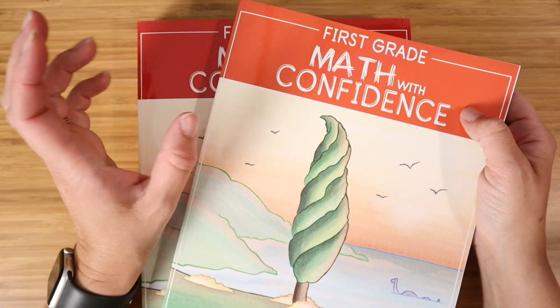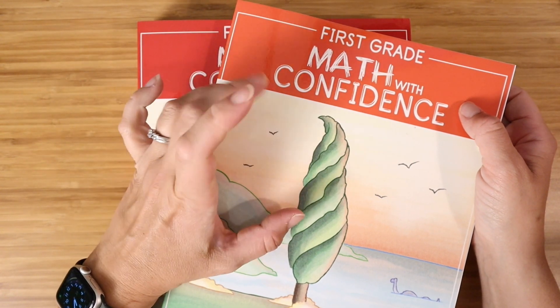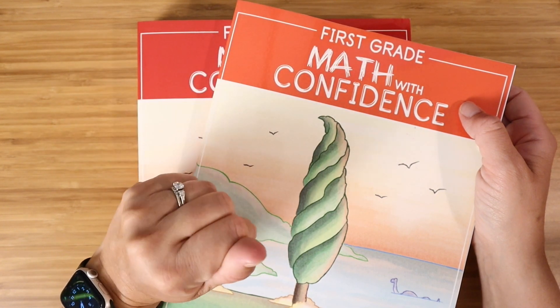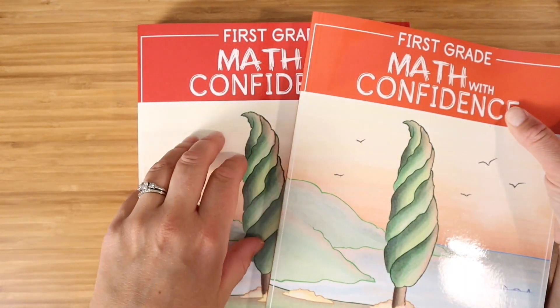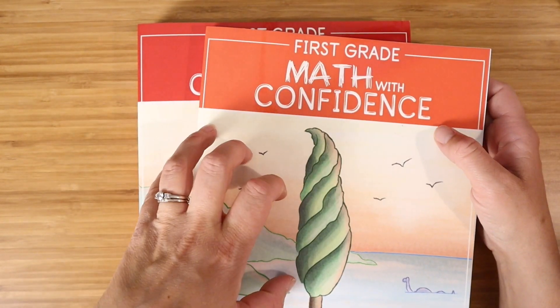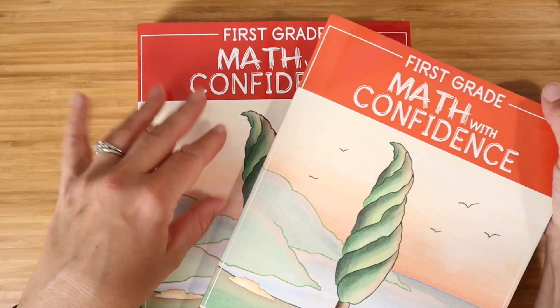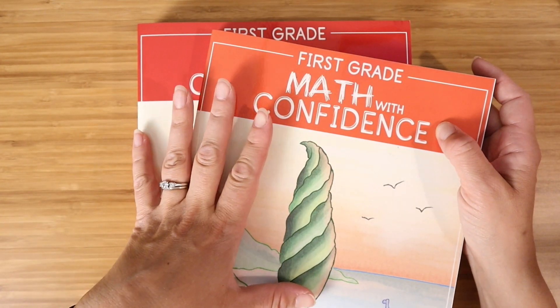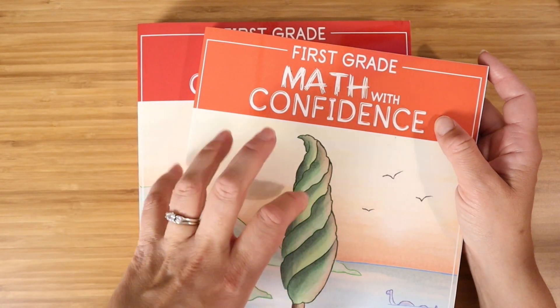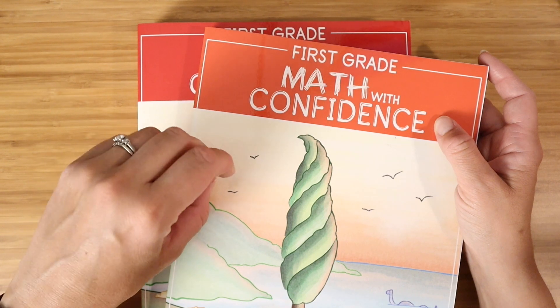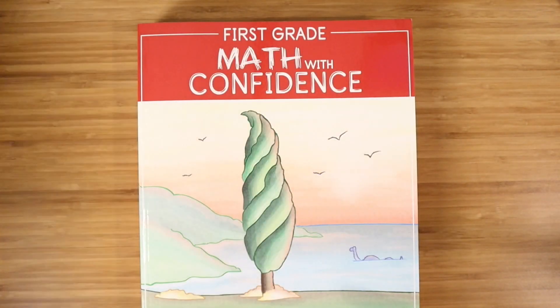If you are new here, I am a former teacher turned homeschool mom of three. My kiddos are currently nine, six and a half, and almost four, and we have been homeschooling from the beginning. I'm going to walk you through Kate Snow's Math with Confidence first grade. If you are interested in reviews of any of those other grade levels, I do have kindergarten up now. Second grade is available now, and third grade will also be available soon.